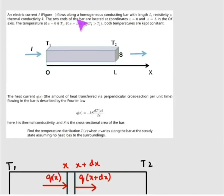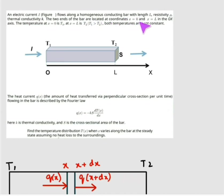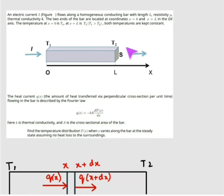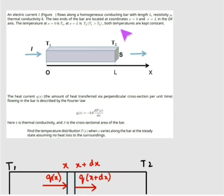An electric current I flows along a homogeneous conducting bar with length L, resistivity rho, and thermal conductivity K. The two ends of the bar are located at coordinates x = 0 and x = L along the x-axis. The temperature at x = 0 is T1 and at x = L is T2, where T1 is greater than T2, and both temperatures are kept constant.